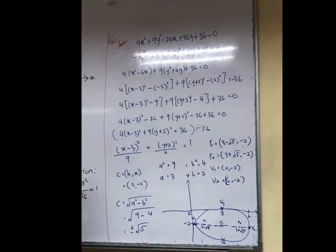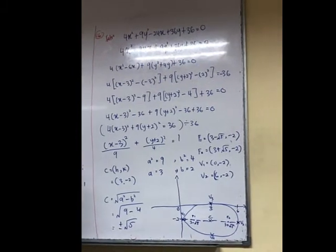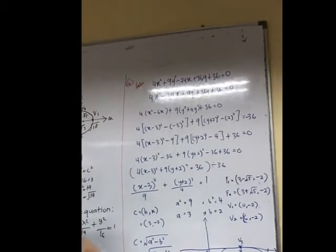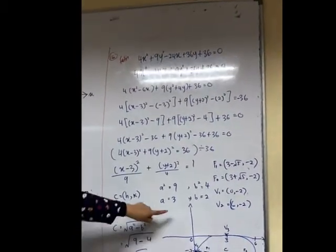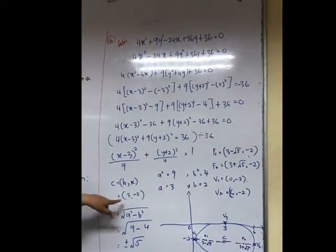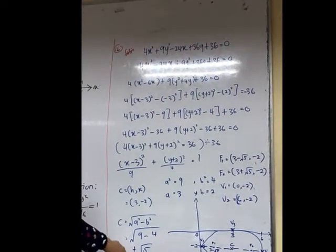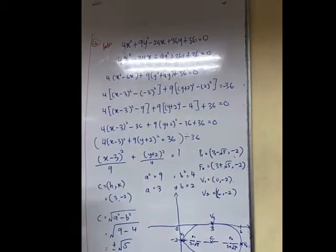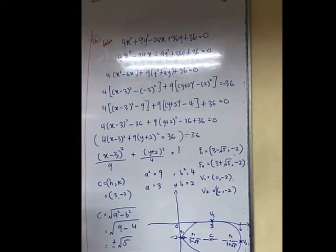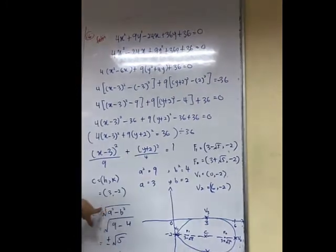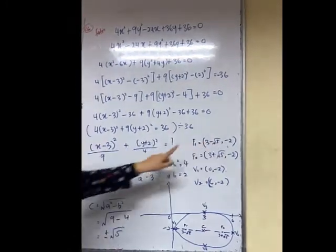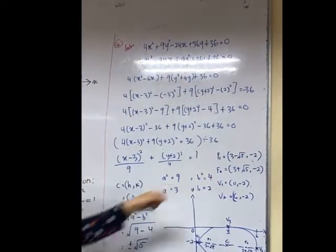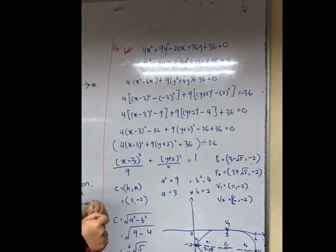To find the foci, we use the formula (h - C, k). We already find A is 3, h is 3, and C is ±√5. So F1 is (h - C, k), h is 3 minus √5 and k is -2. For F2 we use (h + C, k) so we got (3 + √5, -2).